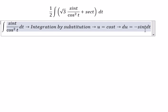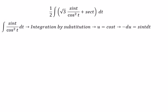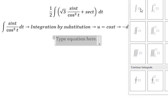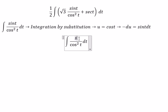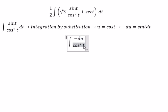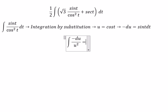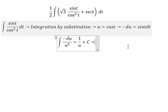So we put u equal to cos t, du equal to negative sin t dt. Because we don't have the negative in here, we put the negative next to du. So about sin t dt, we change for negative du. This one, you got about u squared there, and now we got about one over u plus c.